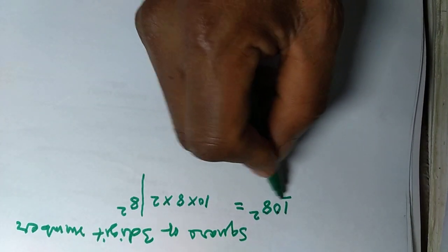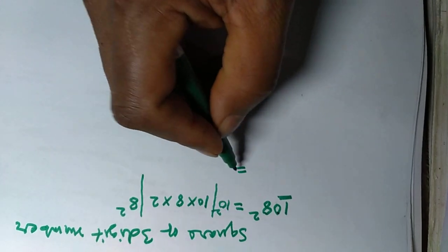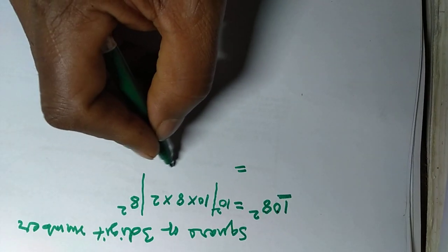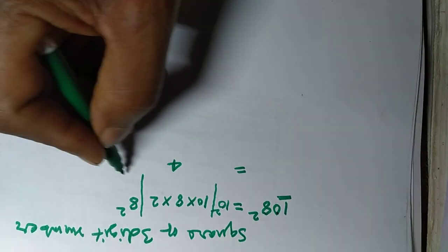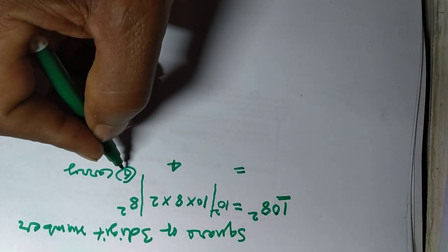8 and this is 10, and 10 squared. You can do very fast. 8 into 8 is 64. Right, here's 4, carry 6.